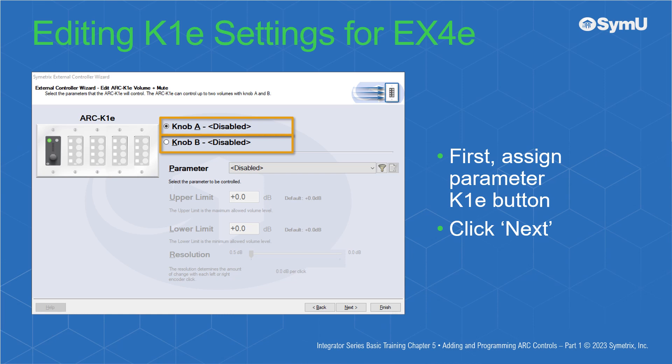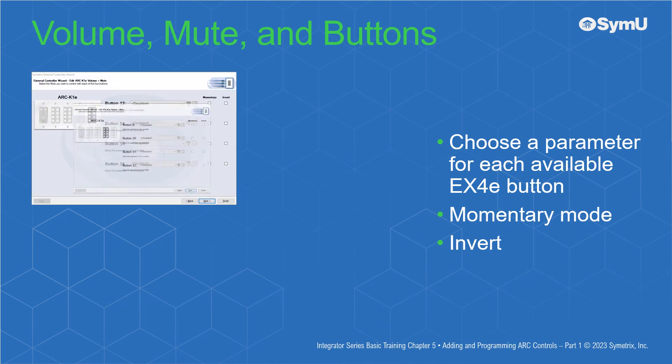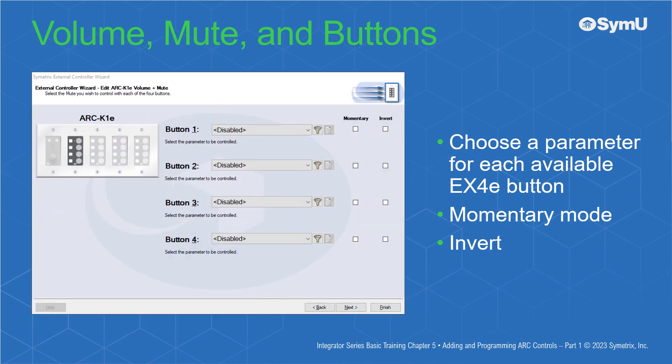Click Next to edit the EX4Es. The Volume Plus Mute, or button mode, allows you to mute up to four parameters per EX4E connected to the K1E. You may engage momentary or invert options as well. The K1E will control up to two volumes. Note that the parameter filter is only available with Jupyter DSPs.